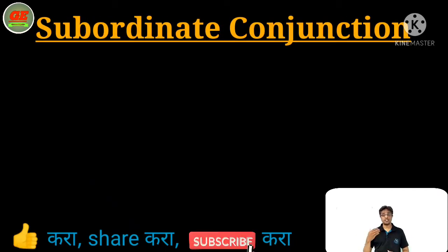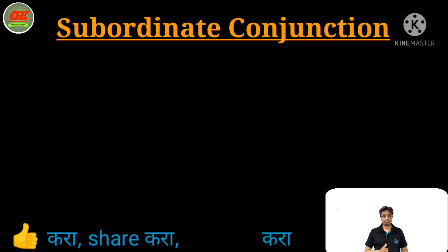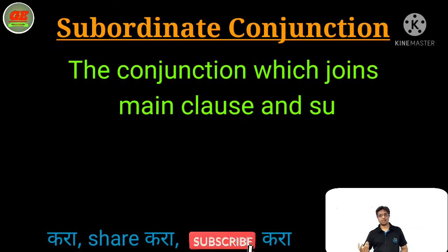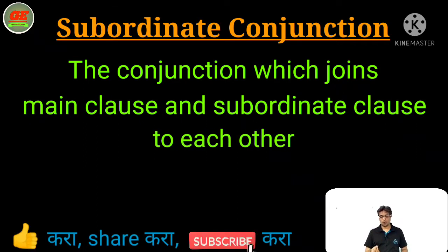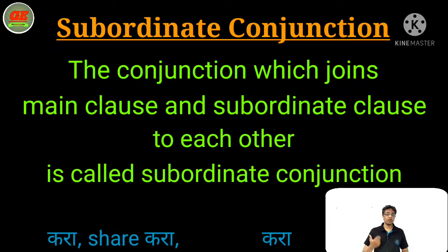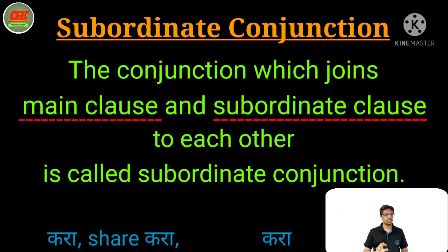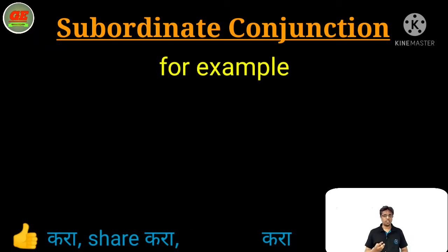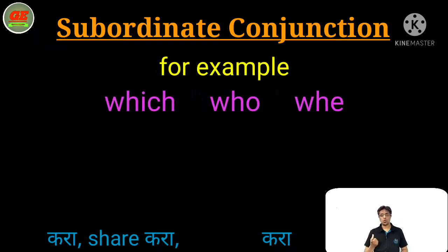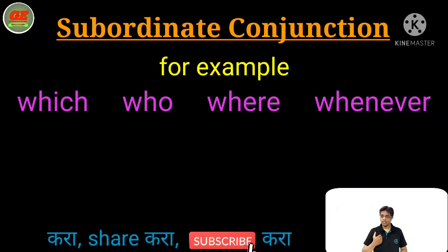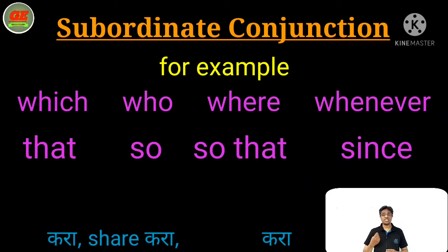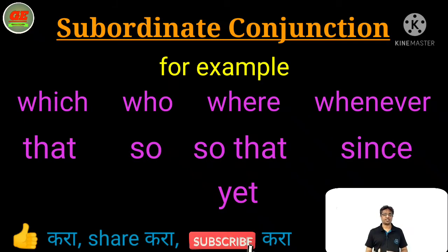On the other side, we should know what is subordinate conjunction. A subordinate conjunction joins a main clause and a subordinate clause to each other. For example: which, who, where, whenever, then, that, so, so that, since, yet — these are some examples of subordinate conjunctions.